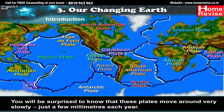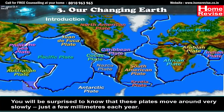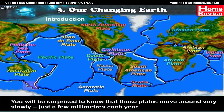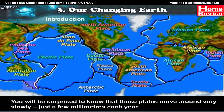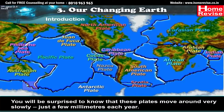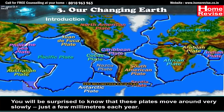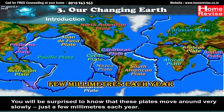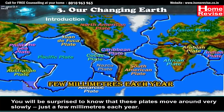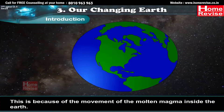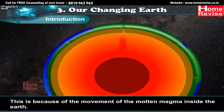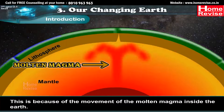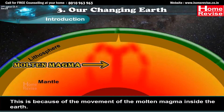You will be surprised to know that these plates move around very slowly — just a few millimeters each year. This is because of the movement of the molten magma inside the Earth.